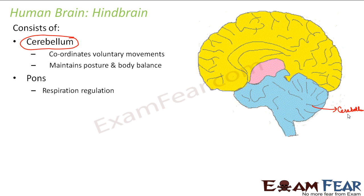The next part is pons. Pons is responsible for regulating respiration. Respiration is something which happens on its own all the time, as it is a process needed for sustaining life. So pons controls the respiration part of human beings.